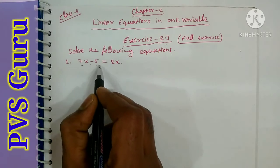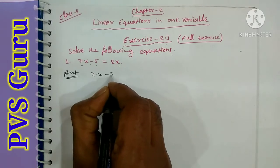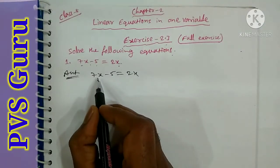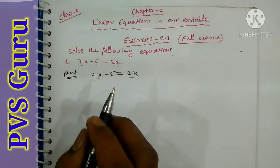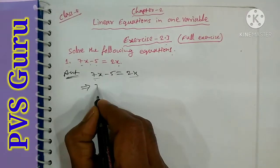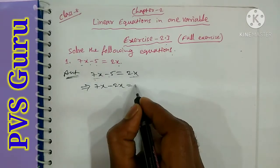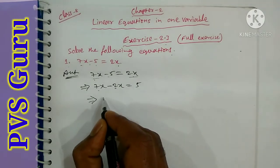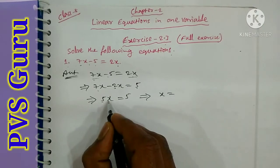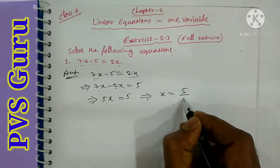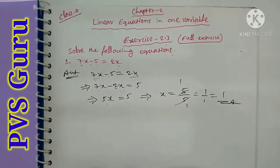First question: 7x minus 5 is equal to 2x. Take all variables to the left side (LHS) and all constants to the right side. So, 7x minus 2x equals 5, giving 5x equals 5. Dividing both sides by 5, x is equal to 1.